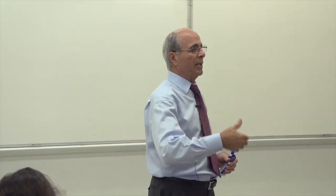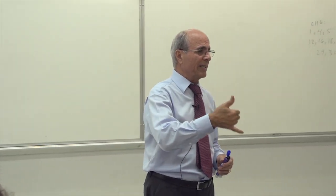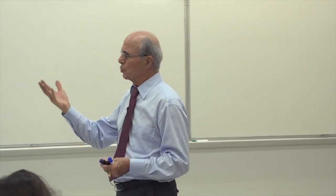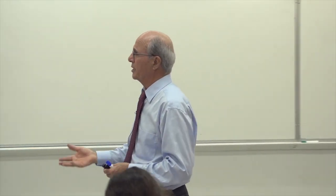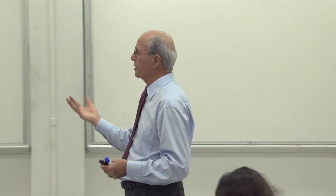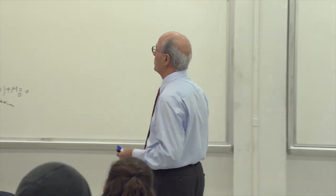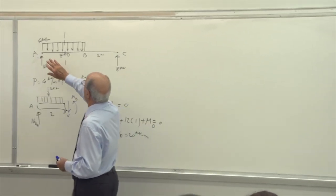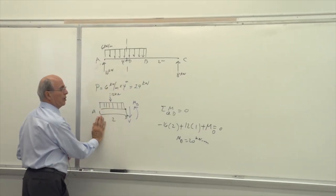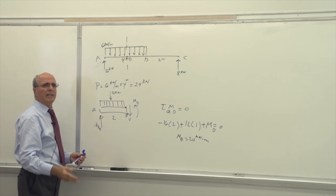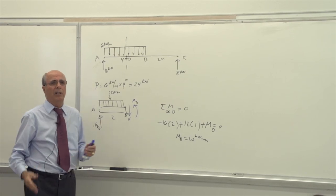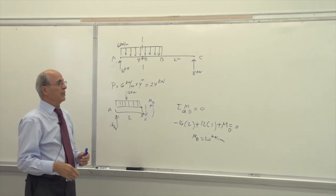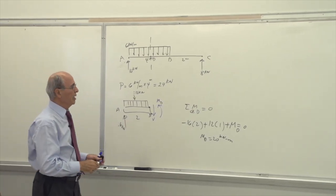They did not calculate the reaction at A and B. How can you go through a system like that and not calculate the reaction? Many people drew only part of it without the reactions. I don't understand what is the logic behind their approach.